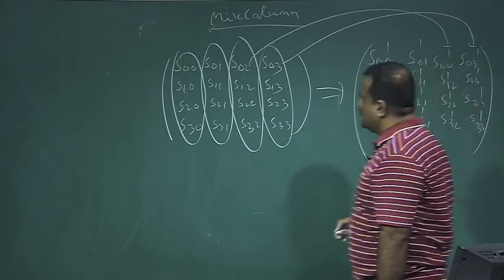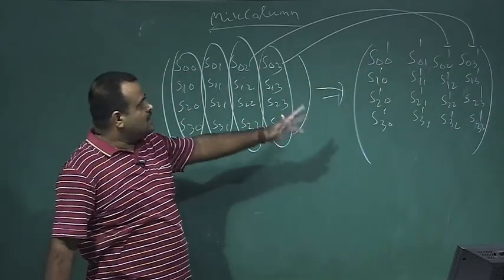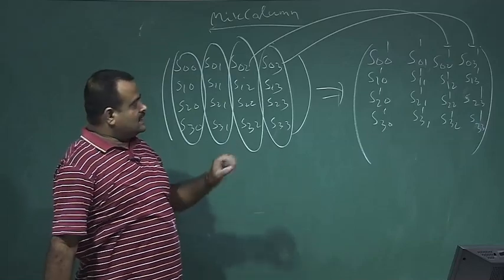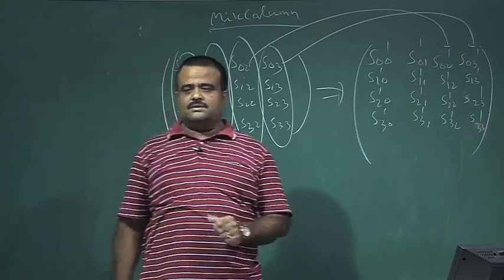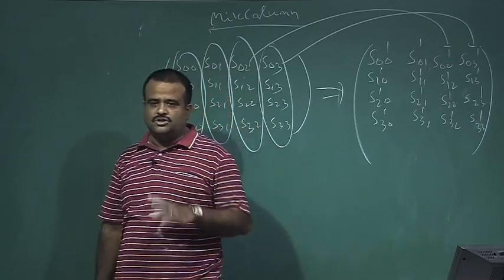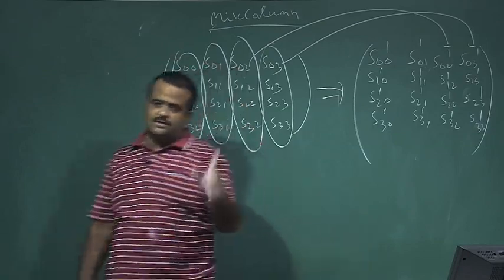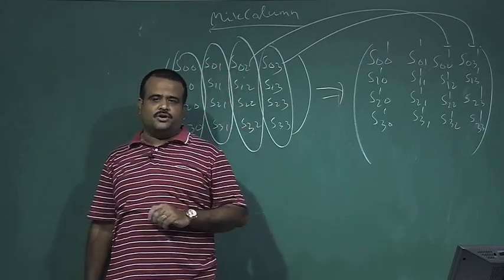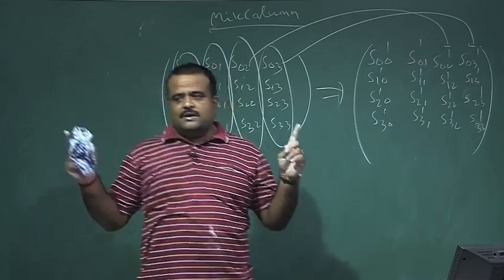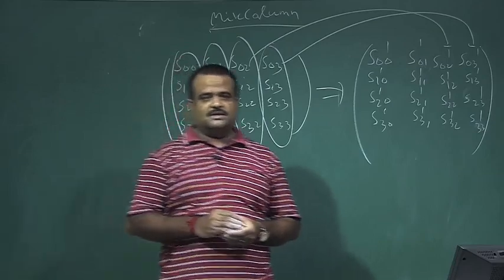The key scheduling algorithm, which produces the round keys, will also be discussed in the next class. For AES-128, we need 11 round keys — k1 through k11 — each 128 bits. These are derived from the original 128-bit secret key. Thank you.